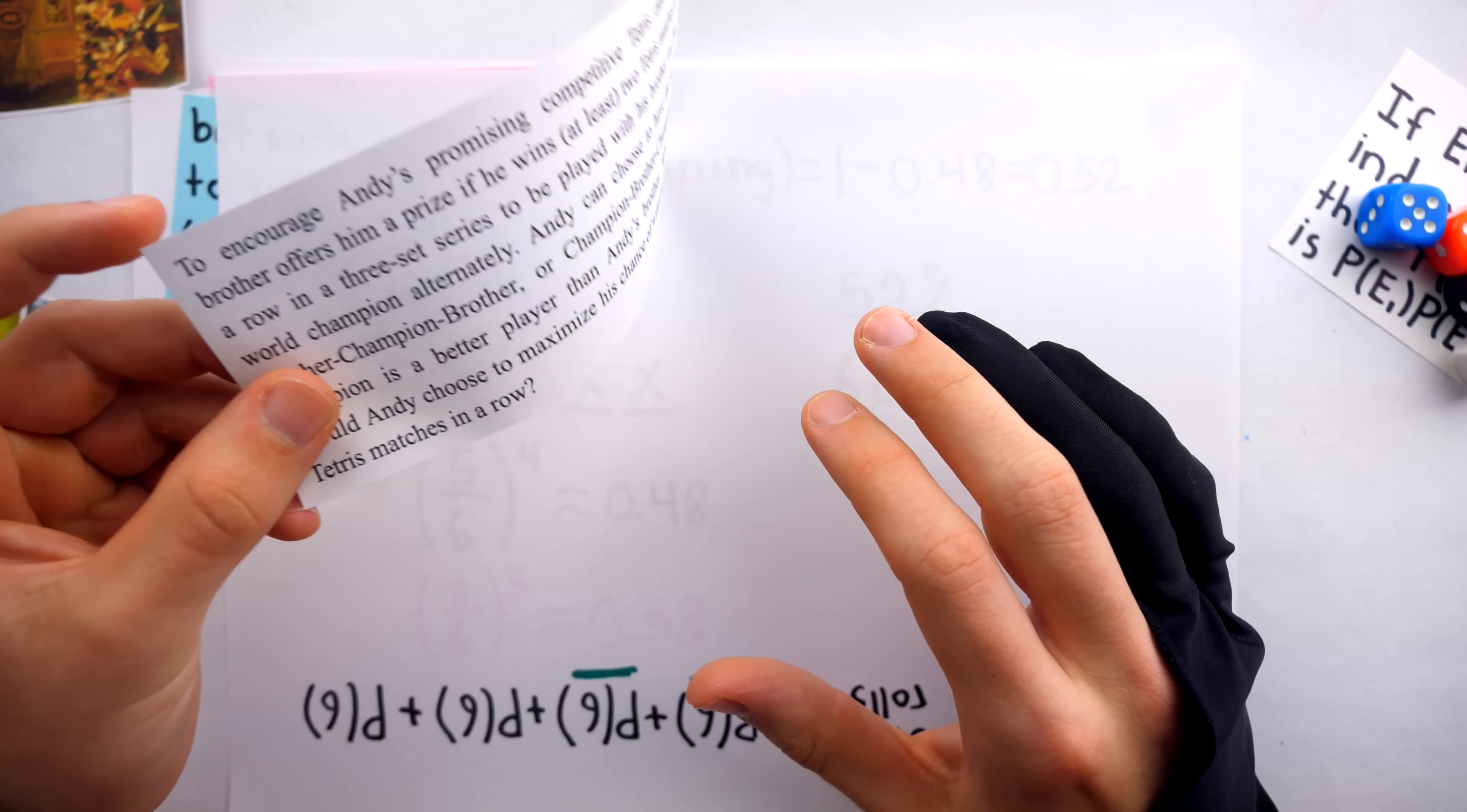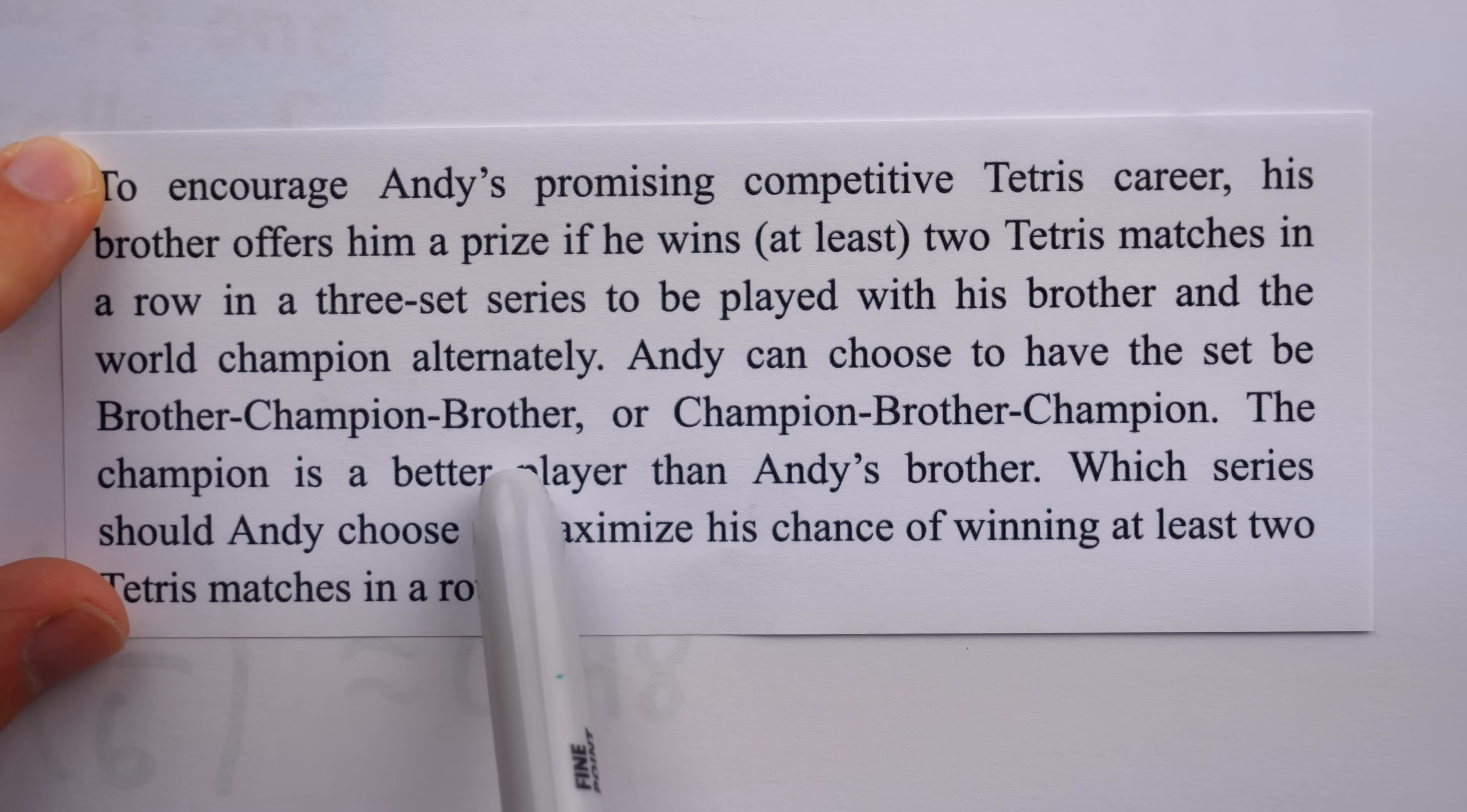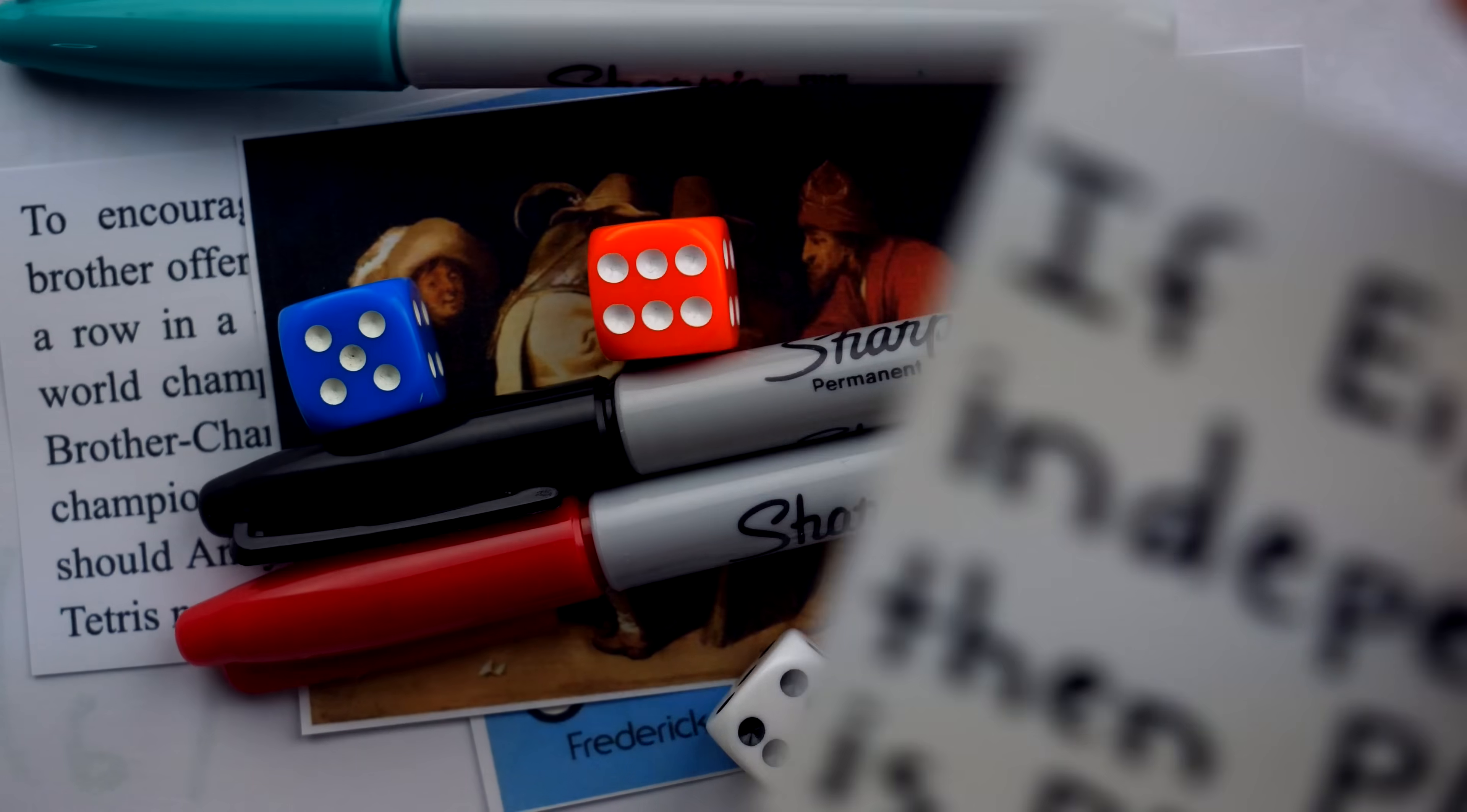With some basic knowledge of probability, here's a fun practice problem you could try. To encourage Andy's promising competitive Tetris career, his brother offers him a prize if he wins at least two Tetris matches in a row in a three-set series, to be played with his brother and the world champion alternately. Andy can choose to have the set be brother-champion-brother, or champion-brother-champion. The champion is a better player than Andy's brother. Which series should Andy choose to maximize his chance of winning at least two Tetris matches in a row? A careful calculation to solve this problem might reveal a surprising answer. If you want to check your answer, I'll leave it in the pinned comment. This problem is, aside from narrative details, taken from this book on 50 Challenging Problems in Probability by Frederick Mosteller. It's a great resource for some more fun probability practice. Let me know in the comments if you would have been a gambler in the 17th century, and be sure to subscribe for more of the swankiest math videos on the internet.